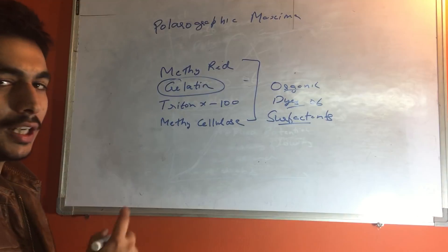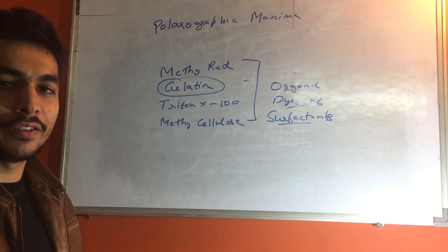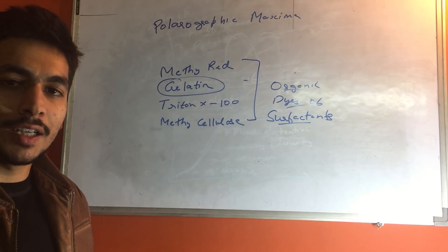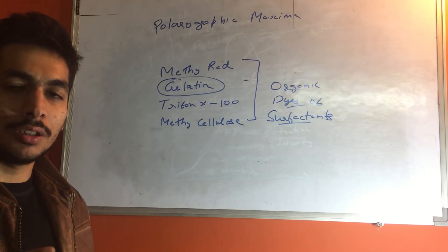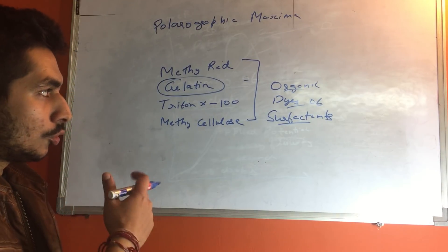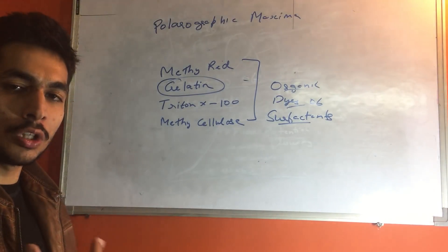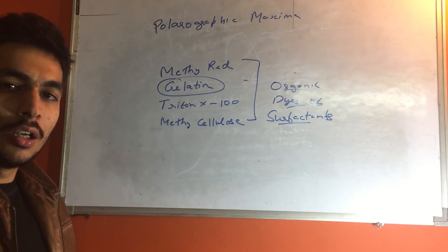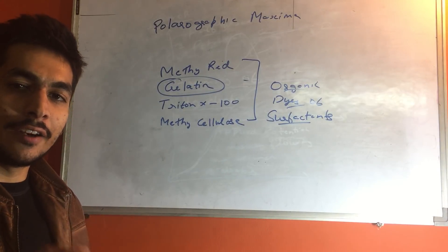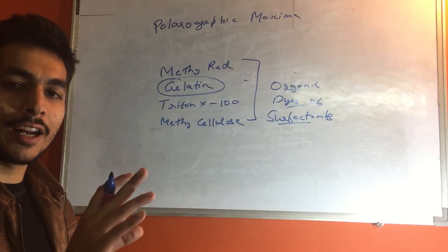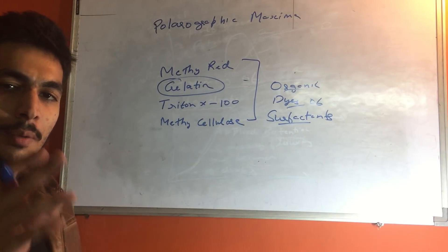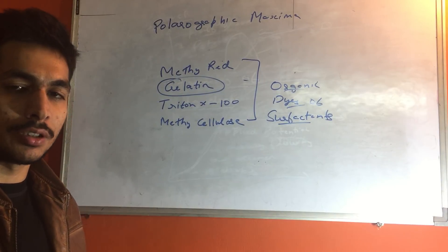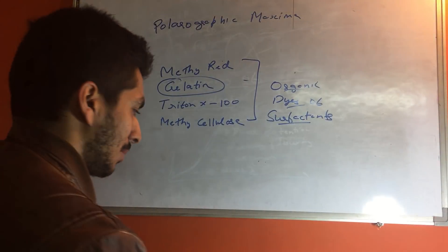A question has been asked about the purpose of adding gelatin in a polarographic experiment. The advantage of adding gelatin is that the polarographic maxima can be reduced. However, you should not add too much of these substances, because adding a very high concentration will suppress the diffusion current, which you do not want. You add these substances in a very small concentration just to avoid the polarographic maxima, not in a high concentration that would suppress the diffusion current.